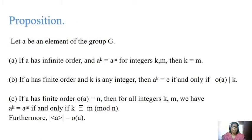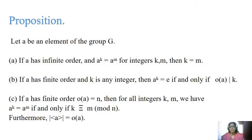Next proposition: let A be an element of group G. If A has infinite order and A^K equals A^M for integers K and M, then K equals M. The elements cyclically repeat — for example with i: i^1, i^2, i^3, i^4, i^5, etc., cyclically repeat. If A^K equals A^M, then K equals M when the order is infinite.